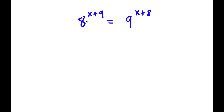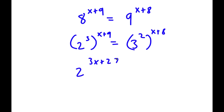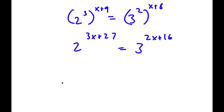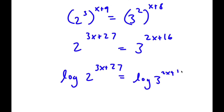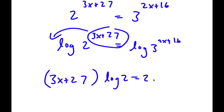In this problem, I have 8 to the power of x plus 9 is equal to 9 to the power of x plus 8. I'm going to rewrite 8 as 2 to the power of 3, and 9 as 3 to the power of 2. This gives 2 to the power of 3x plus 27 is equal to 3 to the power of 2x plus 16. Taking the log on both sides: log 2 to the power of 3x plus 27 is equal to log 3 to the power of 2x plus 16. Moving the exponents to the front: 3x plus 27 times log 2 is equal to 2x plus 16 times log 3.